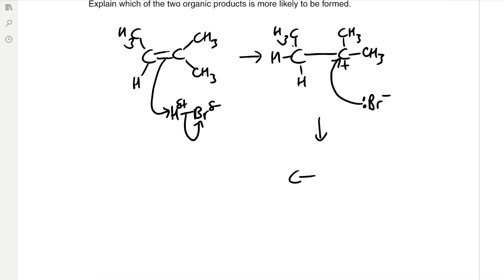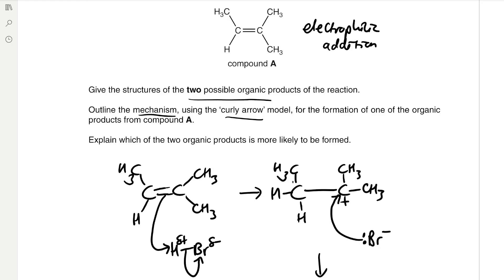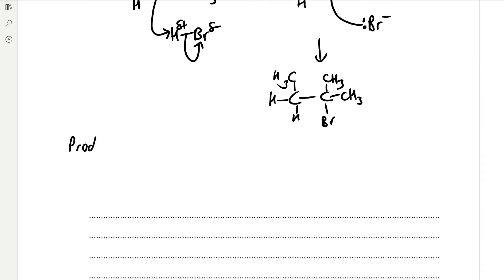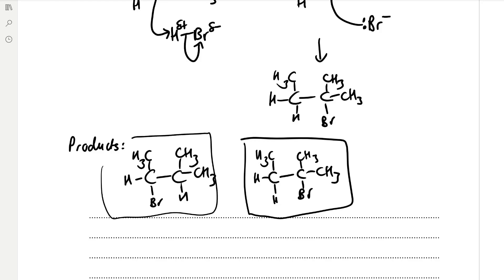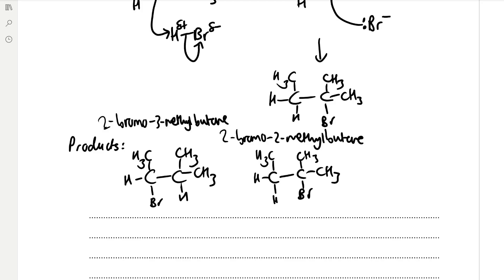The final product has bromine at the position with the most alkyl groups attached. The two products are 2-bromo-2-methylbutane (major) and 2-bromo-3-methylbutane (minor). The major product is 2-bromo-2-methylbutane because it is formed via the most stable carbocation intermediate — the tertiary carbocation with three alkyl groups attached — according to Markovnikov's rule.